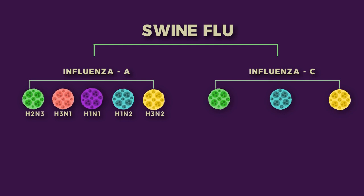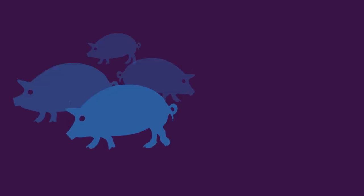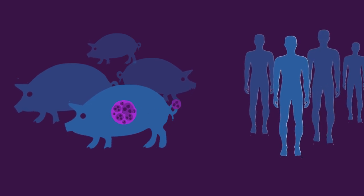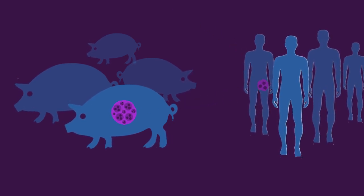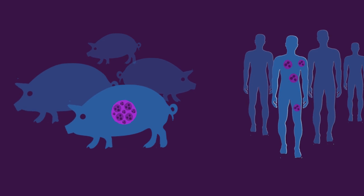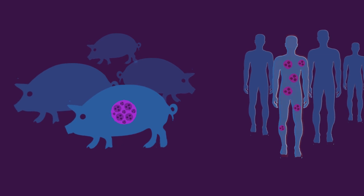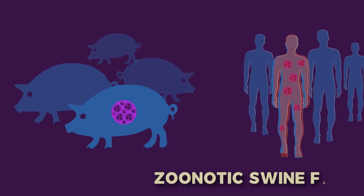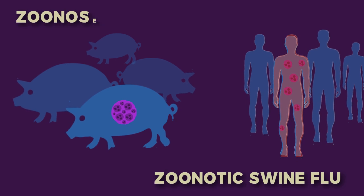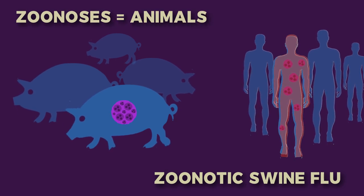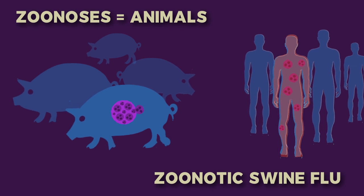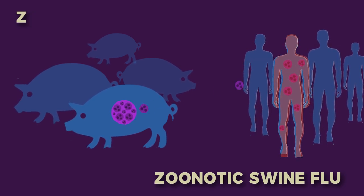Swine flu virus is common throughout the pig population worldwide. Transmission of this virus from pigs to humans is not common and does not always lead to human flu, often resulting only in the production of antibodies in the blood. If transmission does cause human flu, it is called zoonotic swine flu — a name derived from zoonosis, a Greek word for animal. Zoonosis refers to infectious diseases of animals that can naturally be transmitted to humans.